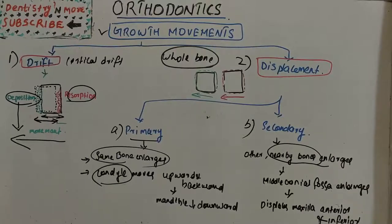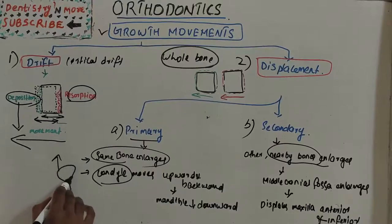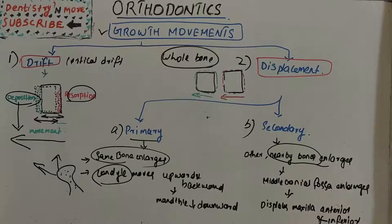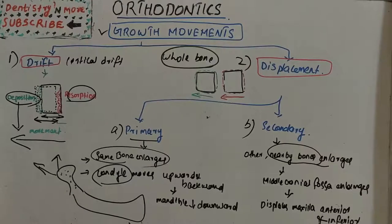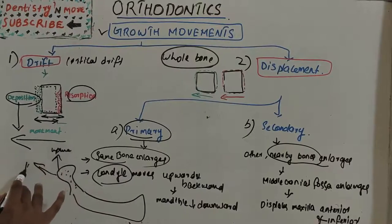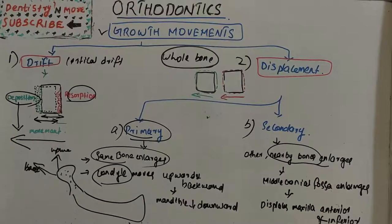Let's take an example of the condyle. The condyle grows upward and backward. When the condyle grows upward and backward, it does so to maintain contact with the mandibular fossa. As a result, the mandible is displaced downward and forward. This is why it is known as primary displacement — the same bone is causing the movement of another part of that bone. The condyle goes upward and backward to stay in contact with the mandibular fossa, and the mandible moves downward and forward.